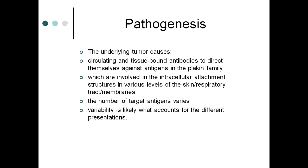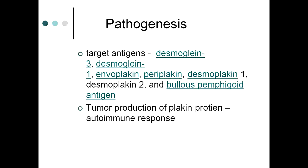In paraneoplastic pemphigus, the underlying tumor causes circulating and tissue-bound antibodies directed against antigens in the plakin family, which are involved in intracellular attachment structures in skin and respiratory tract membranes. Target antigens include desmoglein 1, desmoglein 3, envoplakin, periplakin, desmoplakin, and bullous pemphigoid antigens. Tumor production of plakin proteins induces the autoimmune response.